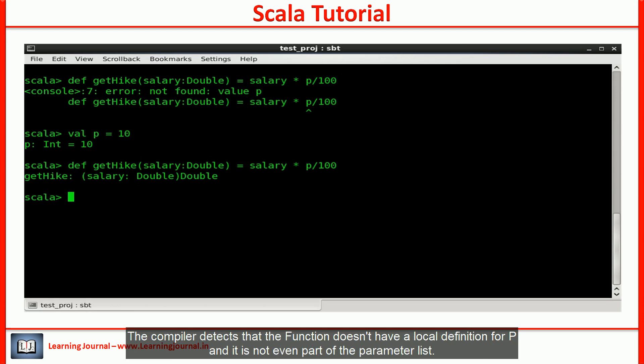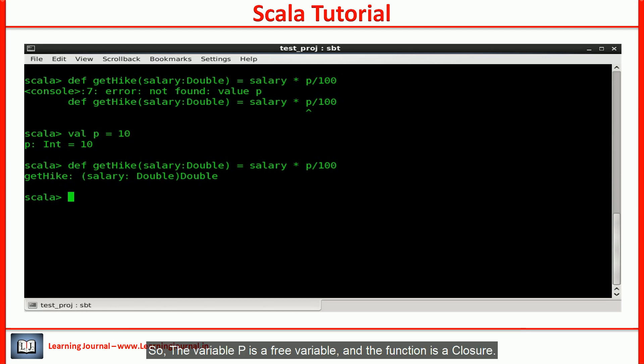The compiler detects that the function doesn't have a local definition for p and it is not even part of the parameter list. So, the variable p is a free variable and the function is a closure.